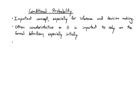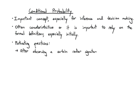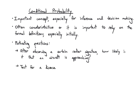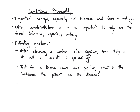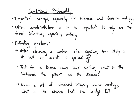Let's think about some motivations. Let's say I've designed a system that can send out radar signals and observe them, and I see a certain radar signature and want to know how likely it is that an aircraft is actually approaching. Or maybe I've designed a test for a disease and it comes back positive — what is the actual likelihood that the patient has the disease? Finally, let's say I take a set of structural integrity readings and want to assess the probability that a bridge fails in five years.